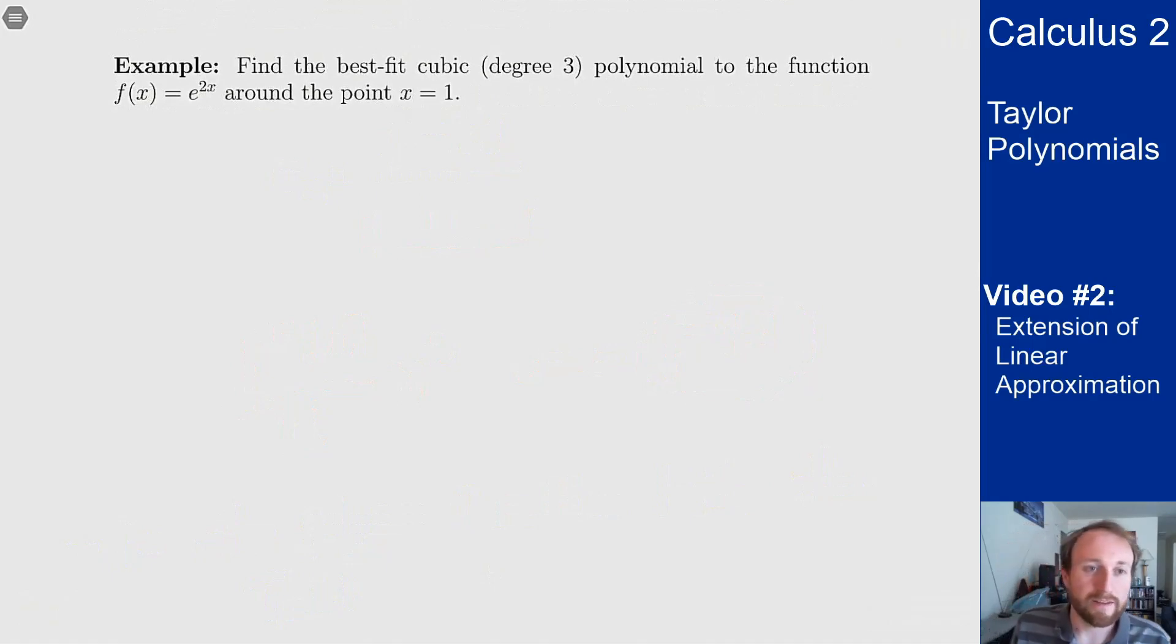As an example, let's find the best fit cubic polynomial to the function f(x) = e^(2x) around the point x = 1. Here we don't have our tricks from before because we're centered at 1, not at 0. I can't use the known series for e^x, so we have to do it by hand.